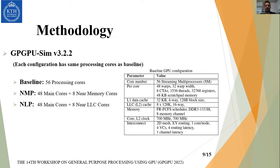For a fair evaluation and comparison, we implemented three configurations — baseline, NLP, and NMP — by modifying GPGPU-Sim version 3. Each configuration has the same total number of processing cores for fair comparison. The baseline conventional GPU uses 56 processing cores; for NMP we use 48 main cores plus 8 near-memory cores; for NLP we use 48 main cores plus 8 near-LLC cores, as shown in the figure.